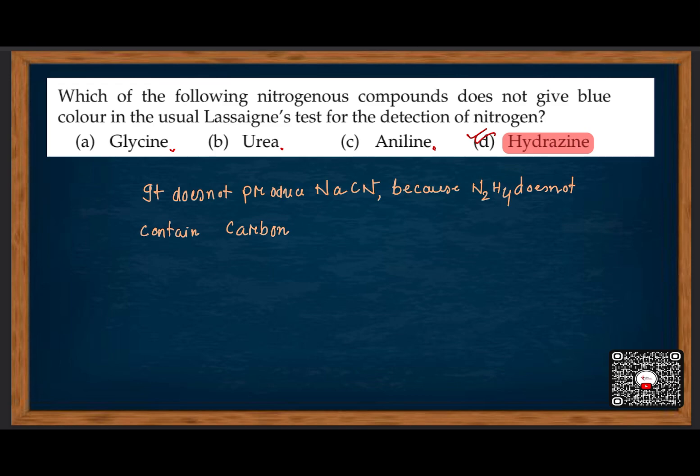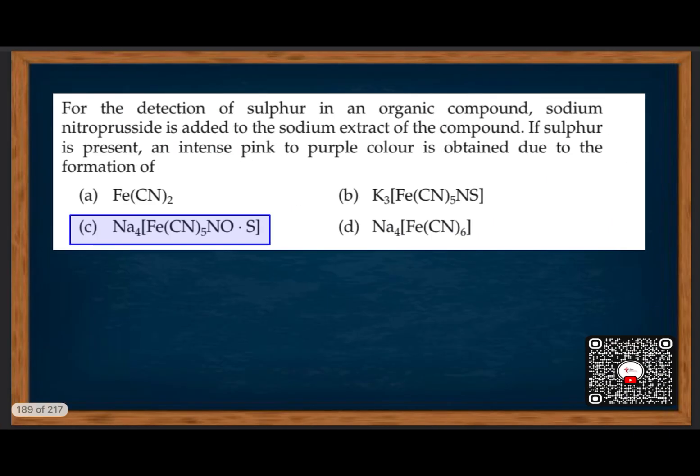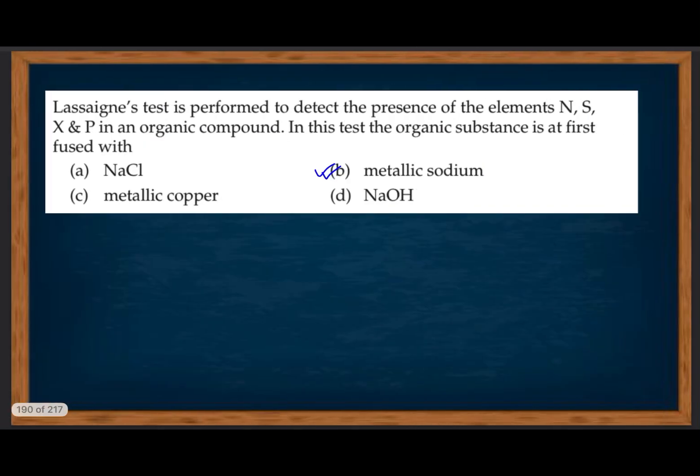For detection of sulfur in an organic compound, sodium nitroprusside is added to the sodium extract of the compound. If sulfur is present, an intense pink to purple color is obtained due to the formation of Na₄[Fe(CN)₅NOS] — sodium nitroprusside test.